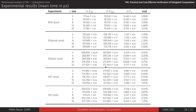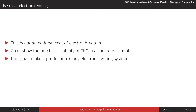Looking at these results, we could say that using THC is virtually free concerning computation time. So now that we have seen that THC is generic, secure, and cost-effective, we still have to see about its usability. We'll do that in the context of a small electronic voting system. Let me stress here that it is not an endorsement of electronic voting, nor is our goal to produce a production-ready voting system. We're only sketching an example of a concrete situation where THC is useful and that allows demonstrating its usability.